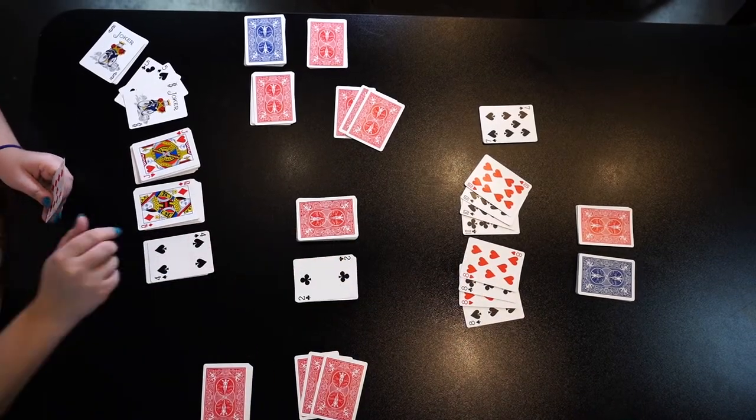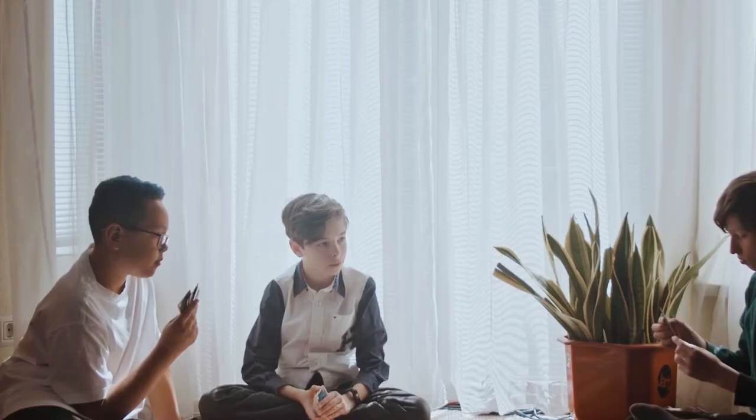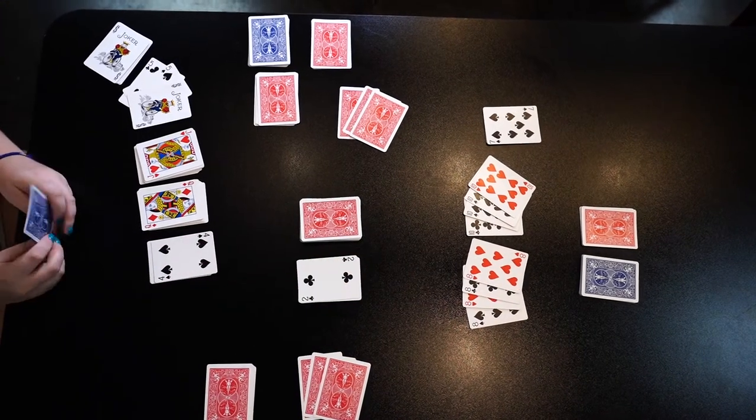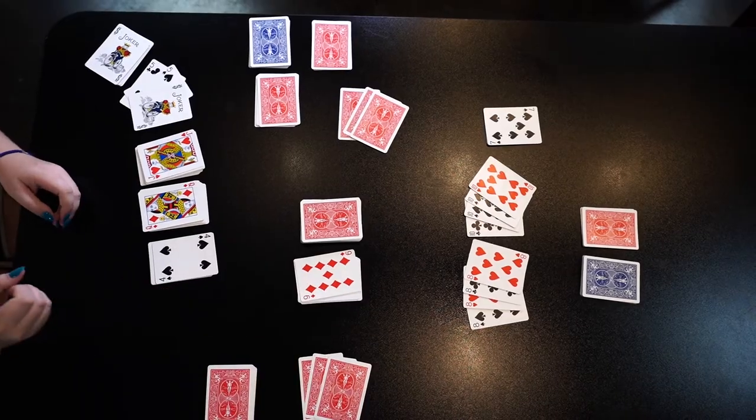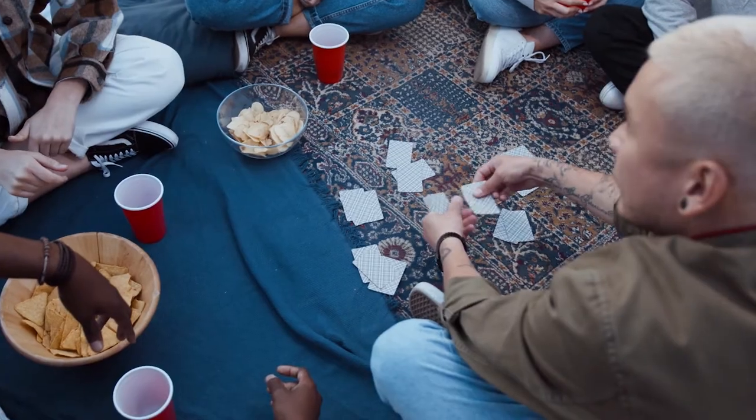Players score points for cards that they meld and lose points for cards left in hand. The play ceases once a player has gone out, which means that they have played both their hand and foot in totality.